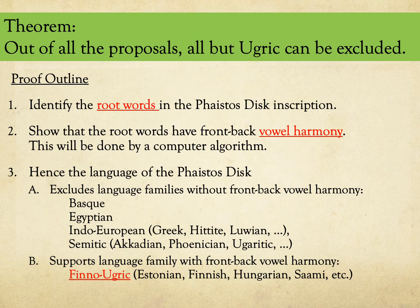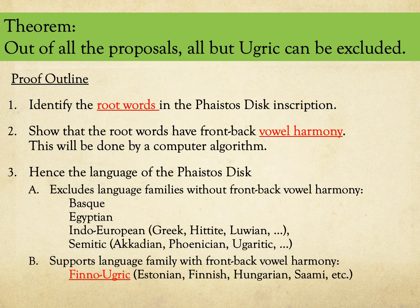Now we can prove the following theorem: out of all the proposals, all but Ugric can be excluded. We already completed the first and second steps of the proof — that is, identifying root words and showing vowel harmony. The third step requires us to evaluate whether the proposed languages have front-back vowel harmony. Since Basque, Egyptian, the Indo-European, and the Semitic languages do not have front-back vowel harmony, these can be excluded from further consideration.